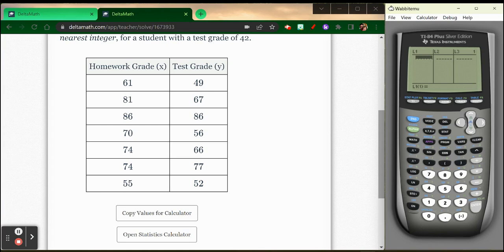So now I can enter in data. And so I'm going to do that. 61, 81, 86, 70, 74, 74 again, and 55. Let's go over to list two. I've got 49, 67, 86, 56, 66, 77, and 52.